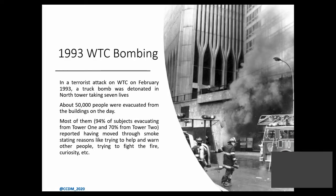On 26th February 1993, a urea nitrate hydrogen bomb was detonated in the basement of the North Tower of the World Trade Center. The structure sustained the damage and did not collapse, but it ended up being one of the largest scale evacuation exercises in history, with over 50,000 people evacuated. The logical thing would have been for evacuees to follow the fire evacuation plan down to the safe assembly area. However, more than 90% of North Tower evacuees and 70% of South Tower evacuees reported walking through smoke. Reasons stated included helping and warning others, trying to fight the fire, and even plain curiosity.